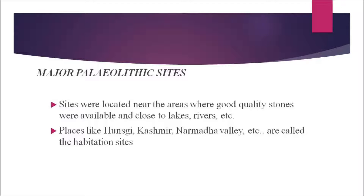A site is a place where stone tools belonging to early humans are found. Most Paleolithic sites were located near areas where good quality stones were available and close to water sources like lakes and rivers. A number of Paleolithic sites have been found in Hunsgi and Kurnool, the riverbeds of the Son river in Punjab, Kashmir, and the Narmada valley. Since early humans lived in these areas, they are also called habitation sites.